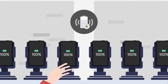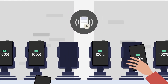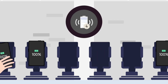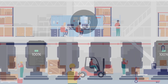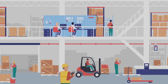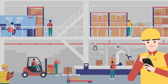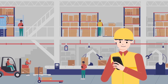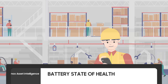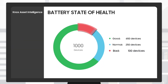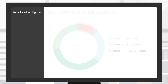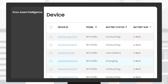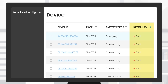By using this information, companies can improve the device charging process so their devices can be fully used without interruption. In addition, Knox Asset Intelligence accurately predicts the battery's health status, helping asset managers plan when to replace their batteries in advance.